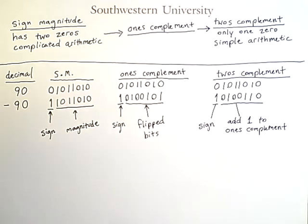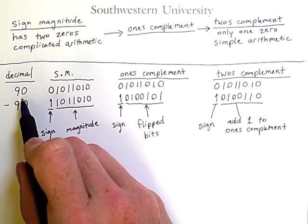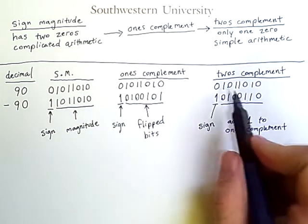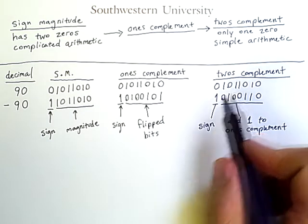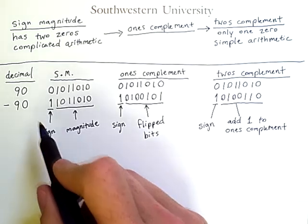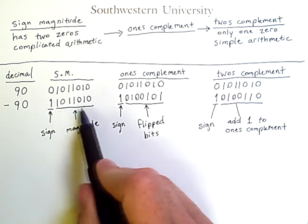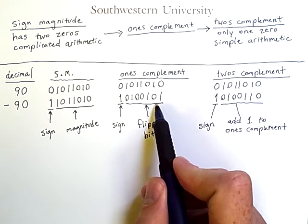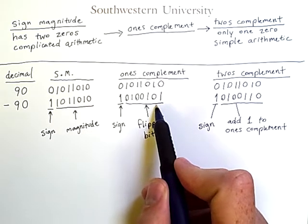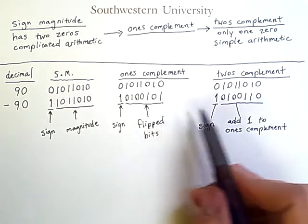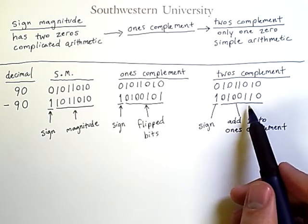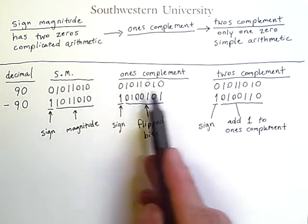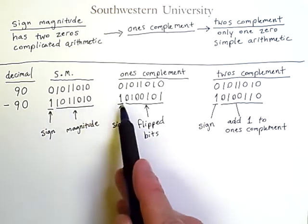So as a refresher, if a value is positive, its sign-magnitude representation and its one's complement representation and its two's complement representation will all be the same. If a value is negative, then you can take the magnitude and flip all of those bits to get the one's complement representation and then add 1 to that binary number to get the two's complement representation. However, no matter which system you are using, an initial bit of 0 represents a positive number and an initial bit of 1 represents a negative number.